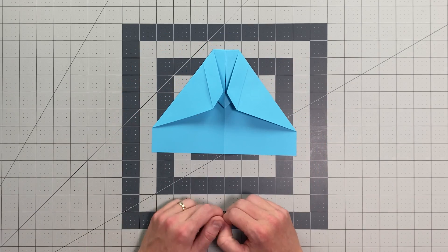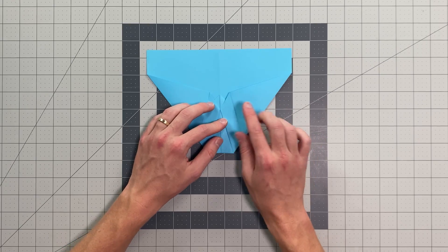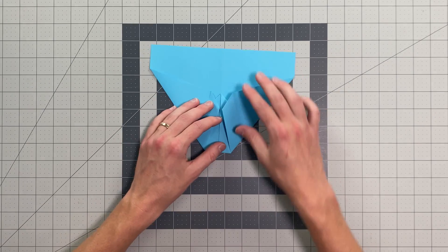Okay, so your plane should look like this. Now I'm going to rotate it into this position here, and I'm going to make the next fold, and then I'll explain to you exactly what I did.